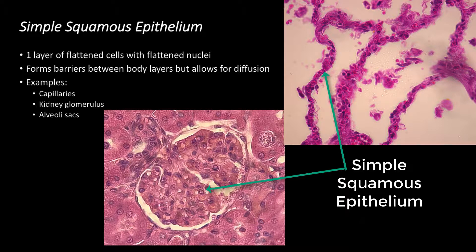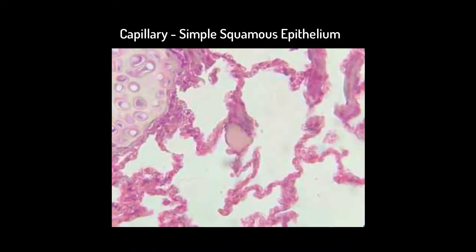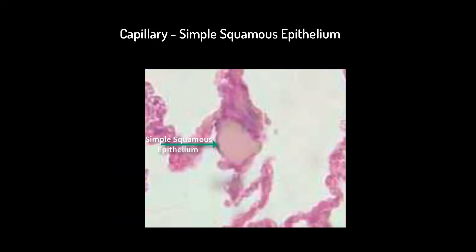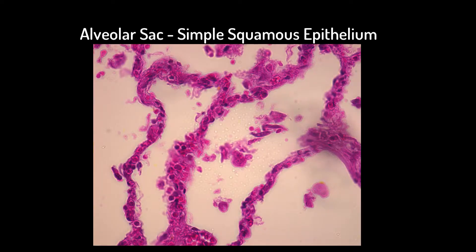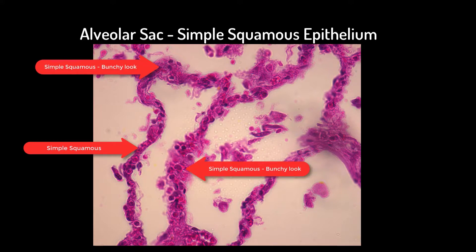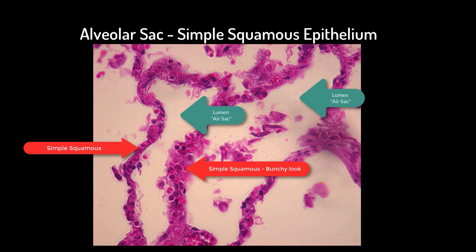In some areas of the body, the simple squamous epithelia are porous to facilitate movement of materials, such as in capillaries or in kidney glomeruli. When viewing capillary epithelia, one would find a small round lumen surrounded by thin, plate-like simple squamous epithelial cells containing very little cytoplasm. By contrast, the simple squamous epithelia of the alveolar sacs in the lungs have a bunchier look and surround an amorphous lumen. The cells become thinner and tauter as the air sacs fill with gases during inspiration. When deflated, as seen on your slides, the cytoplasm and cells resume a bunchier appearance.